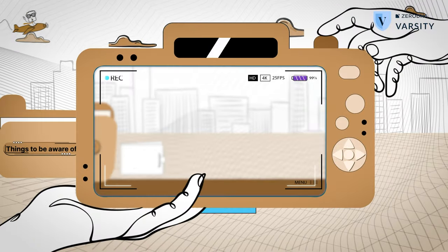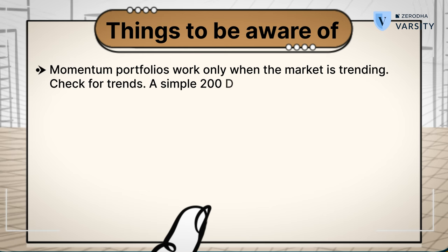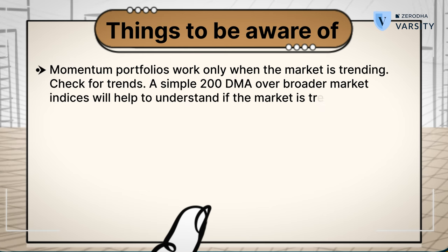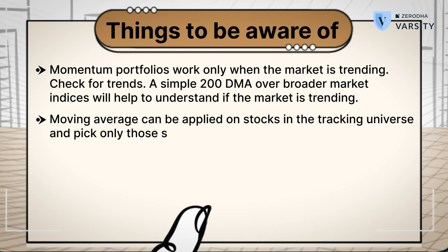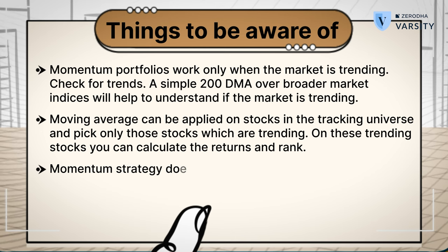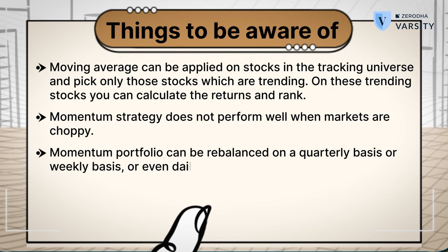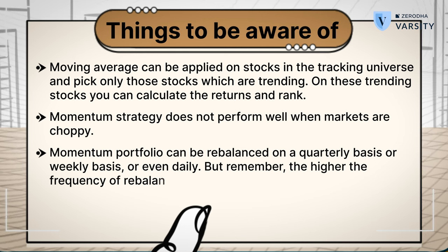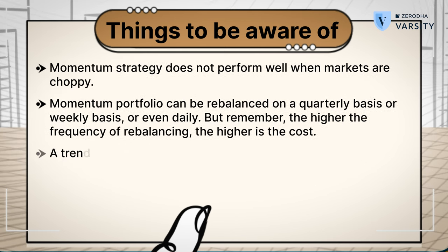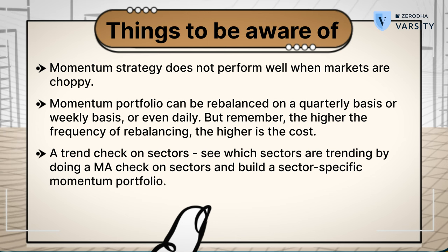Before I wrap this video, a few things you need to be aware of. Momentum portfolio works only when the market is trending, so make sure you check for trend. A simple 200-day moving average over broader market indices will help you understand if the market is trending. You can even apply a moving average over all stocks in your tracking universe and pick only those that are trending — calculate returns and rank only on those. Momentum strategy does not perform well when markets are choppy, so avoid using it in choppy markets. Also remember: higher the frequency of rebalancing, higher are your costs including brokerage. You can also do a trend check on sectors — see which sectors are trending using a simple moving average check and build sector-specific momentum portfolios.